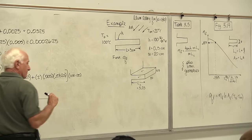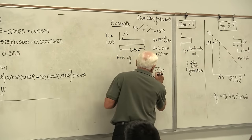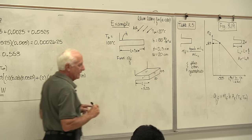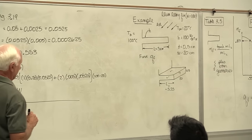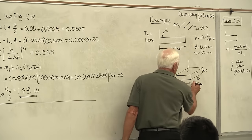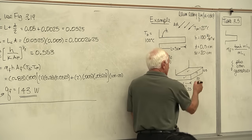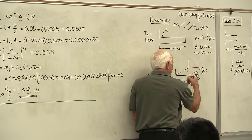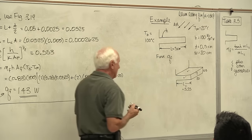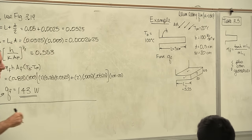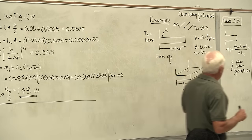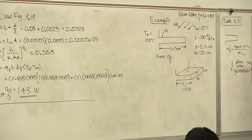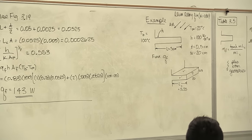Just to remind you: when using Figure 3-19 or Table 3-5, we use Lc everywhere — which means we made the fin slightly longer so the tip is treated as adiabatic, and convection occurs around the top, bottom, front, and back. But for Table 3-4, we do not use Lc.